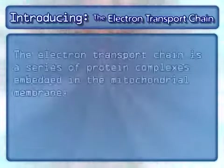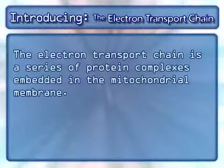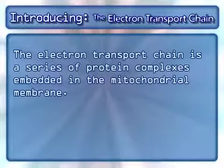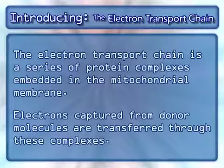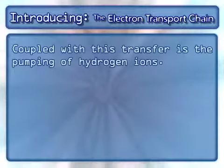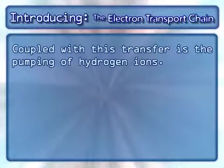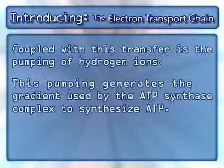The electron transport chain is a series of protein complexes embedded in the mitochondrial membrane. Electrons captured from donor molecules are transferred through these complexes. Coupled with this transfer is the pumping of hydrogen ions, which generates the gradient used by the ATP synthase complex to synthesize ATP.